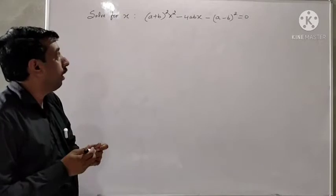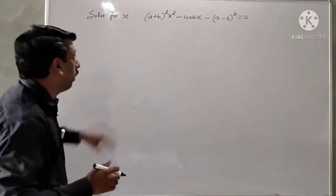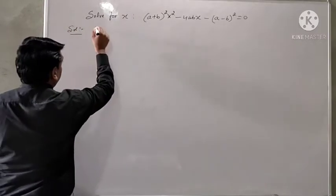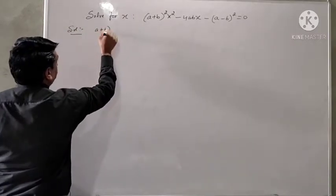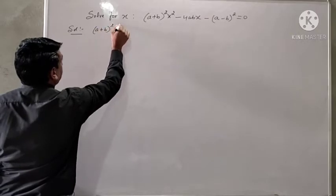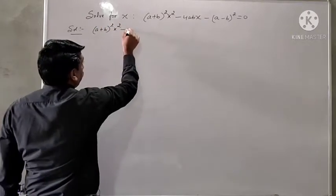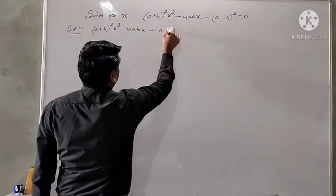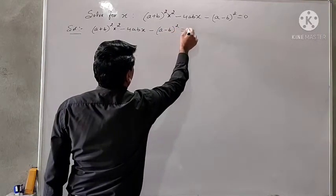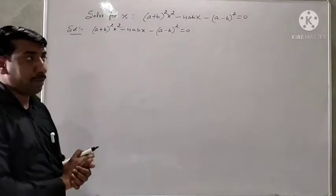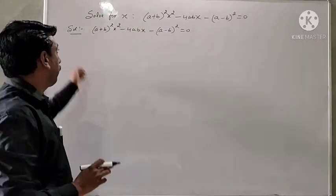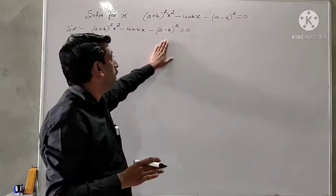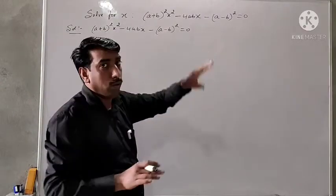We have to find out the value of x. The question is: (a plus b) whole square x squared minus 4abx minus (a minus b) whole square equals 0. We can see that the coefficient of x squared is (a plus b) whole square and the constant term is negative (a minus b) whole square.